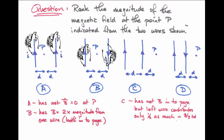In fact, the magnetic field in case C has about three halves of the magnetic field strength from the one wire, whereas in case B it's about twice as strong.